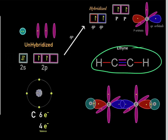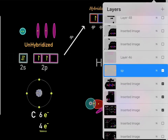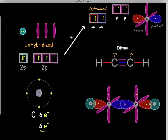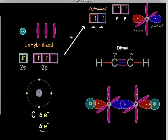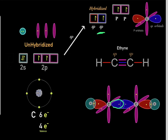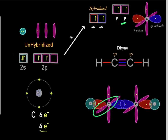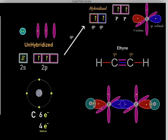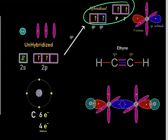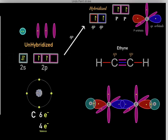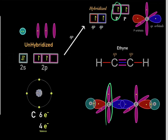For example, we have the ethyne compound, where both carbons are sp hybridized. Focusing on one carbon: it has one sp hybridized orbital, another sp hybridized orbital, and two unhybridized p orbitals — one in each direction. Carbon has four valence electrons, so each orbital has an electron: each sp orbital has an electron, and each unhybridized p orbital has an electron.